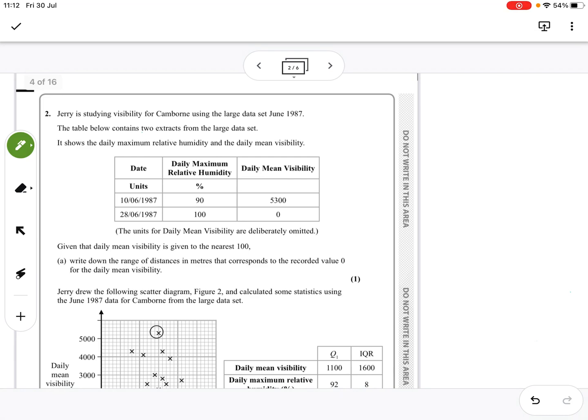This is the large data set question. So a table shows two extracts of the large data set. It shows a maximum relative humidity and a mean daily mean visibility. So maximum humidity is a percentage and daily mean visibility.